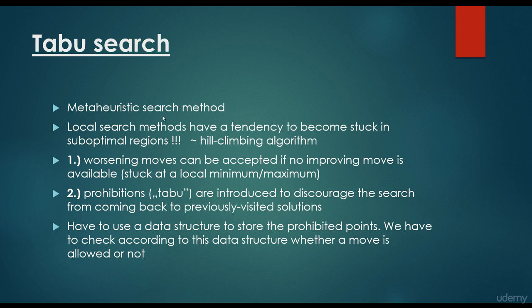There are several meta-heuristic approaches out there, such as genetic algorithms, particle swarm optimization, simulated annealing, and tabu search, for example. Local search methods have a tendency to become stuck in sub-optimal regions, such as the hill-climbing algorithm.